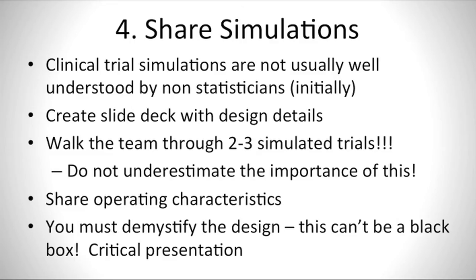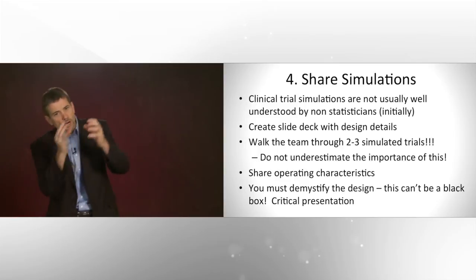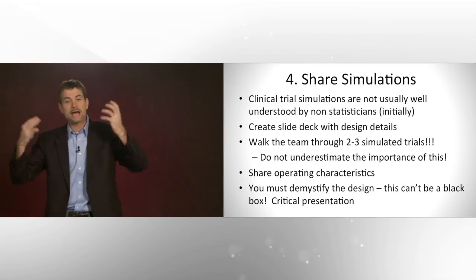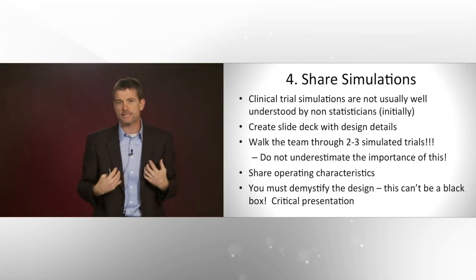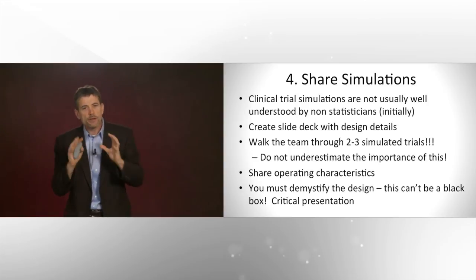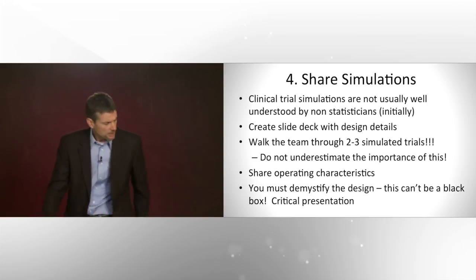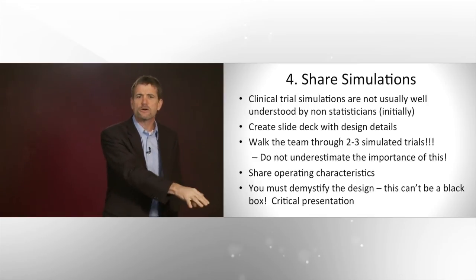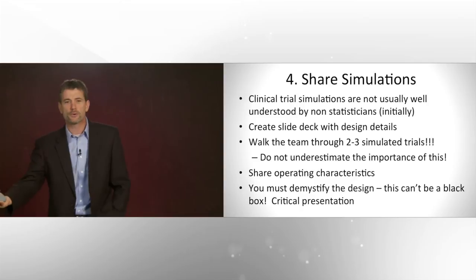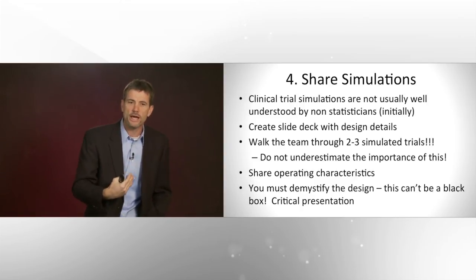So you have to walk them through example trials. It's a huge mistake if you skip this step. Walk them through two to three simulated trials. They'll see how the data fits in with the model, with the adaptations. If you jump right to operating characteristics, they miss that. And they will ask you questions that demonstrate they completely missed that step. So show them example trials. And then they will ask you before you get to operating characteristics, well that's one trial, what if I do this twice or a thousand times? And you naturally walk into the operating characteristics. So set up the sharing of simulations in a way that this demystifies the design. You need to communicate very, very well. Or they might just say we're not going to do this. It doesn't work. Because they never understood it. You didn't communicate it properly.